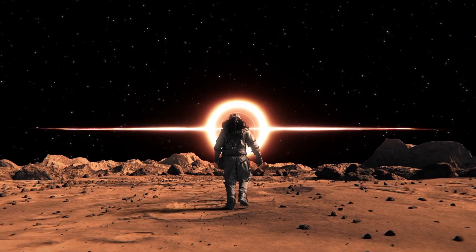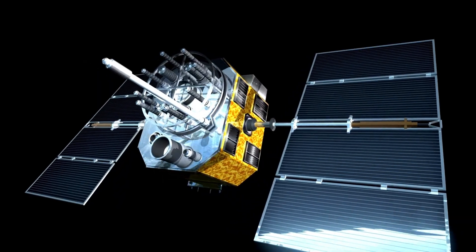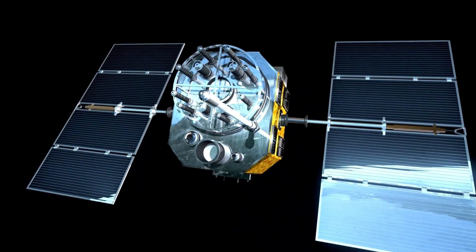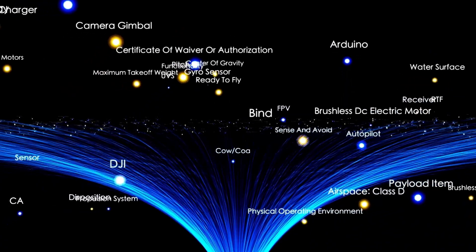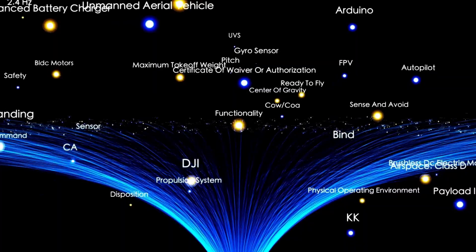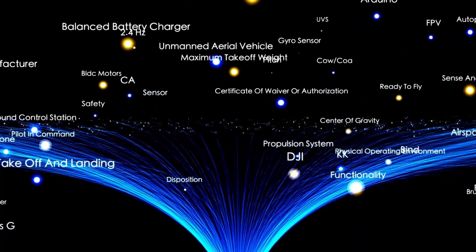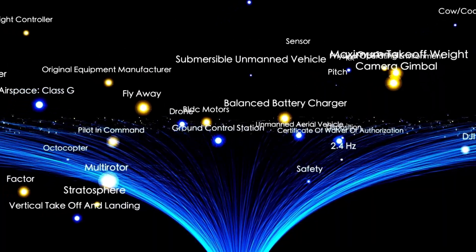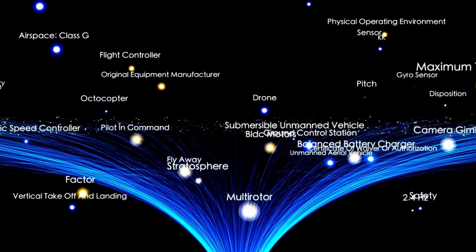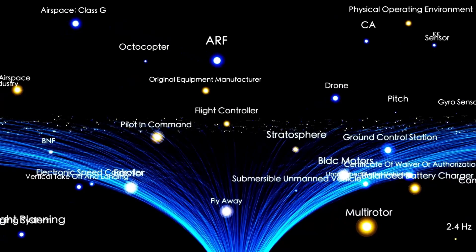Voyager 2 is not merely a scientific tool—it's also a time capsule. As with its twin, it bears the Golden Record, a gold-plated copper record that holds sounds and images intended to represent the richness of life and culture on Earth. Salutations in 55 languages, the sounds of rain, wind, and animals, and music ranging from Bach to Chuck Berry are inscribed on it.